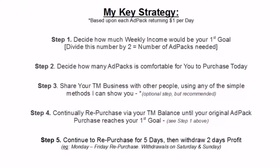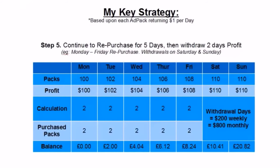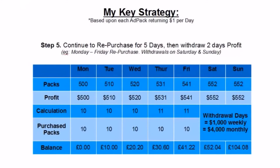Then in step 5, having reached your goal, you put in the key strategy: repurchase for 5 days and then withdraw for 2 days. So for example, you could repurchase continuously Monday through to Friday, and then on Saturday and Sunday start to do withdrawals. With 100 packs, Monday to Friday we're repurchasing 2 packs out of the $100 profit every single day, and then on Saturday and Sunday we're withdrawing $100 each day without any repurchases — and as you can see, the balance continues to grow. With 500 packs you continue to purchase Monday through Friday and do withdrawals on Saturday and Sunday. If you'd like a breakdown of all of these spreadsheets, there will be download links below the videos at the bottom of the page.